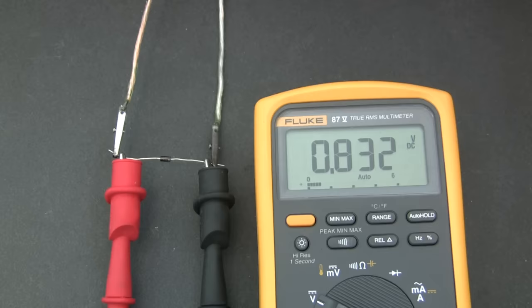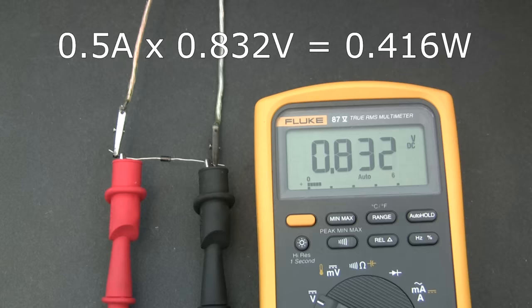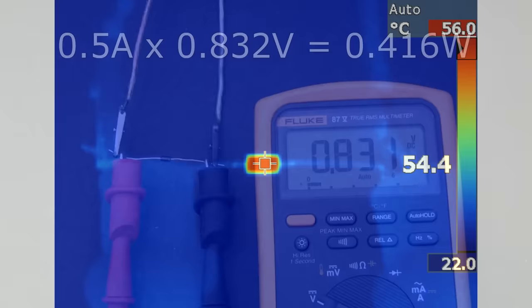Let me show you an example. Here I have a regular 1N4007 silicon diode with 500 milliamps flowing through it. If I measure the voltage drop across the diode it is 0.832 volts. 0.5 amps multiplied by 0.832 volts gives 416 milliwatts of heat. And that is causing the diode to have a temperature of 54 degrees.